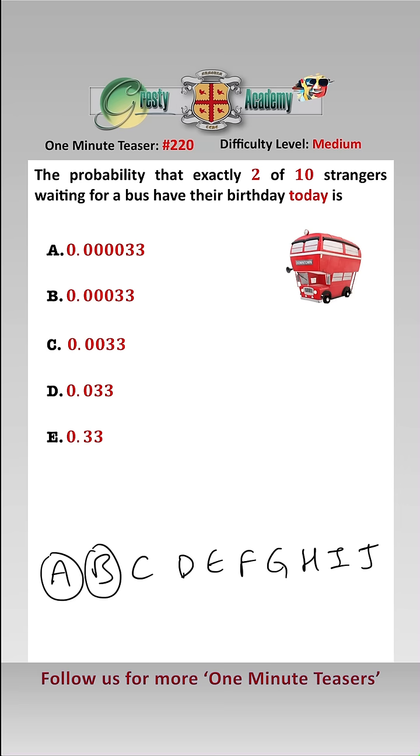Let's imagine that it's A and B who share the birthday today. The probability that A's birthday is today is 1 over 365, and the probability that B's birthday is today is 1 over 365.